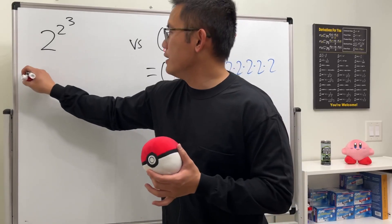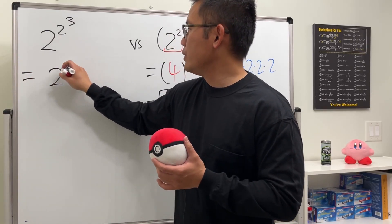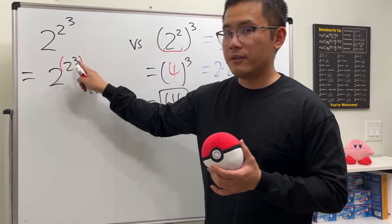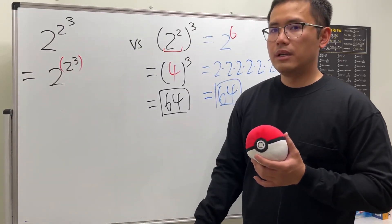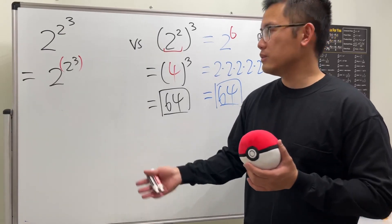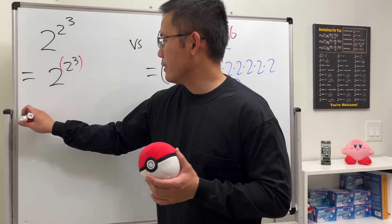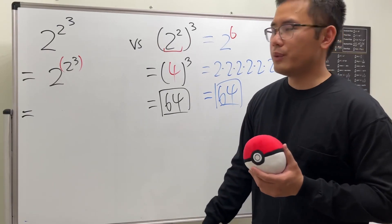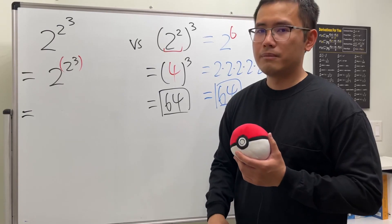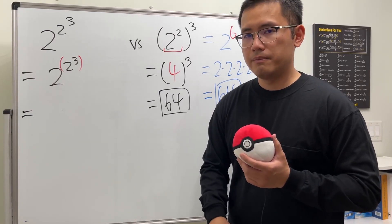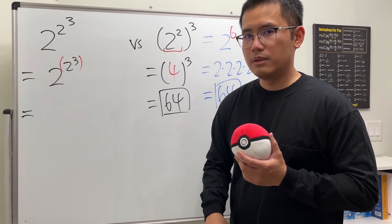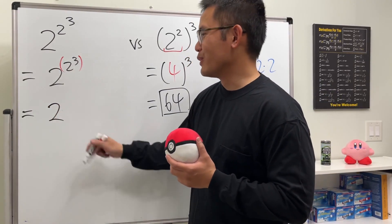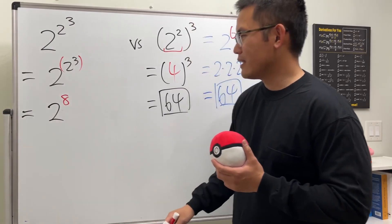Without parentheses, 2 to the 2 to the third power means we do the upper exponent first. So we compute 2 to the third power first: 2 times 2 times 2, which equals 8. We then use that 8 as the exponent.